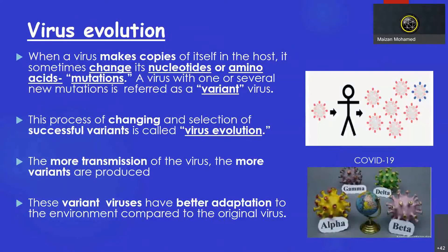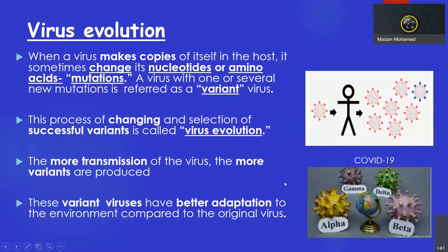Virus evolution occurs when a virus makes copies of itself and sometimes changes its nucleotide or amino acid sequence — this is called mutation. From these mutations, several new mutants are produced, referred to as variant viruses. The process of changing and selection of successful variants is called virus evolution. The more the virus is transmitted, the more variants can be produced.